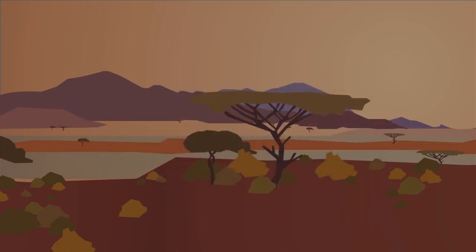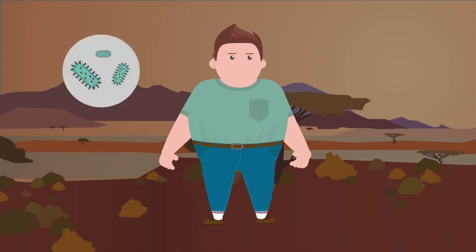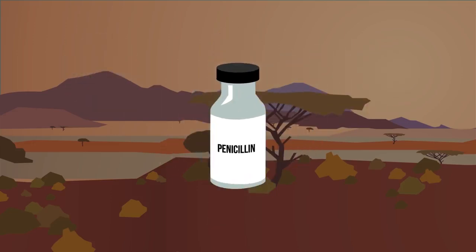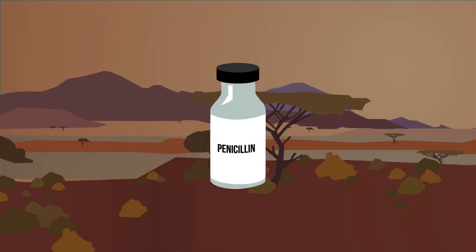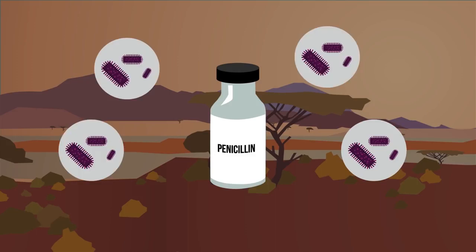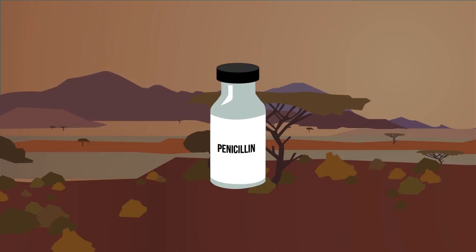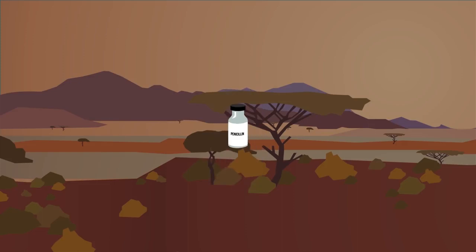Natural selection can directly impact humans when it comes to treating diseases. The discovery of the antibiotic penicillin in 1928 was lauded as a great advancement in therapeutic medicine and it soon became widely used. However, within just a few years some bacteria could withstand the effects of penicillin — they had adapted a resistance to the antibiotic. These fitter bacteria survived, and in the late 20th century, bacteria populations began to emerge that were resistant to penicillin. Nowadays, antibiotics are used more sparingly and scientists are attempting to find other ways to treat infections.